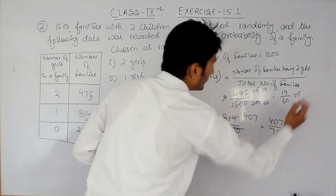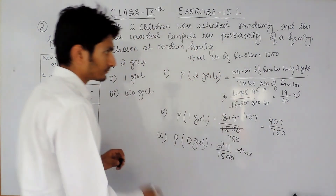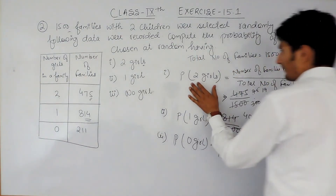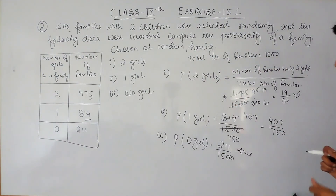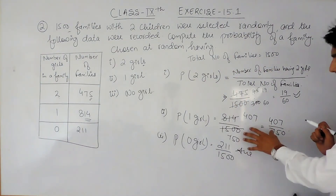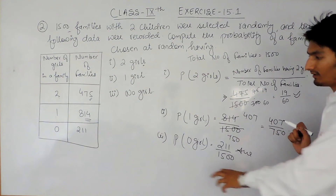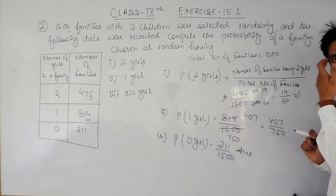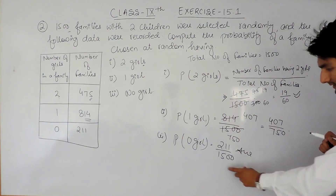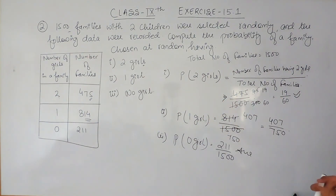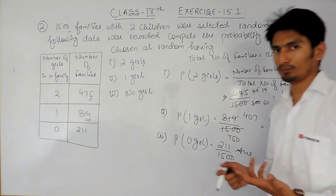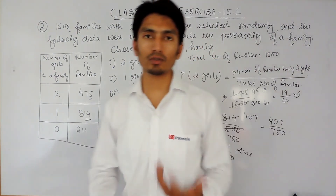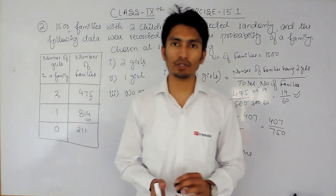So to summarize: 19/60 is the probability of a family having two girls, 407/750 is the probability when the number of girls is one, and 211/1500 is the probability when the number of girls is zero. This is how you can solve the second question.